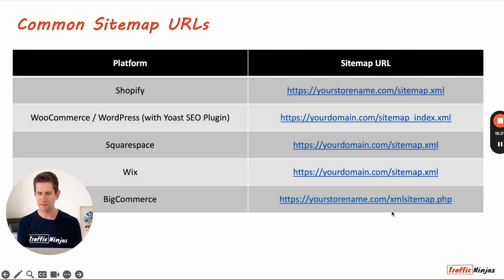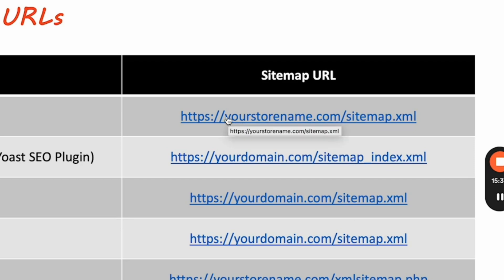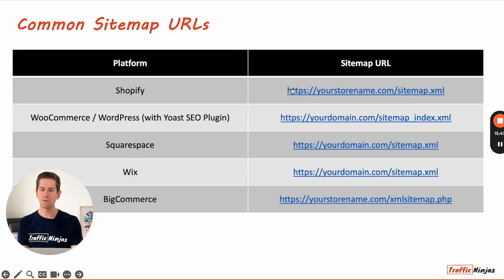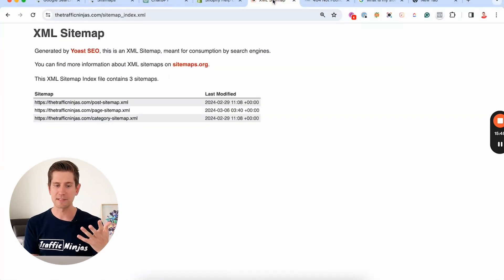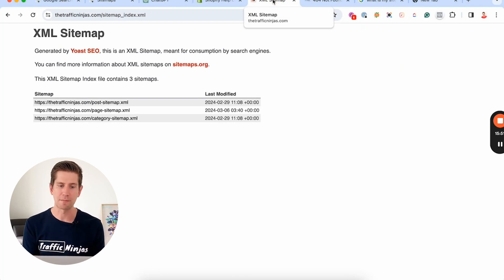You can see they're all very similar — sitemap.xml across all the major platforms. All you need to do is swap in your own domain name and you'll be able to paste that in and add it. Before you copy and paste it, let's just check that it actually works for your website, in case there's some different setting on your site.